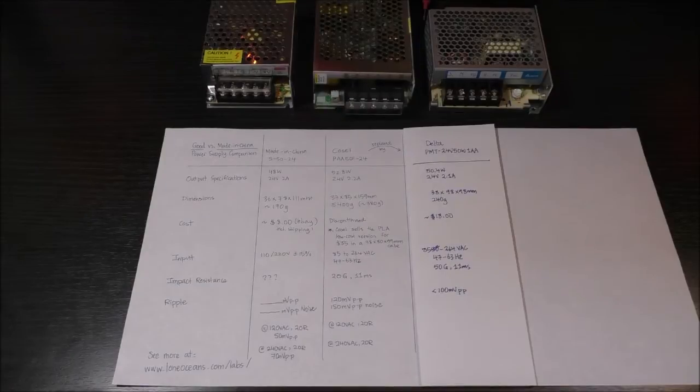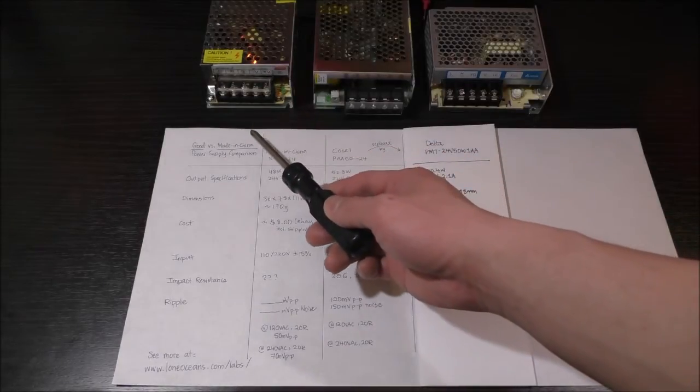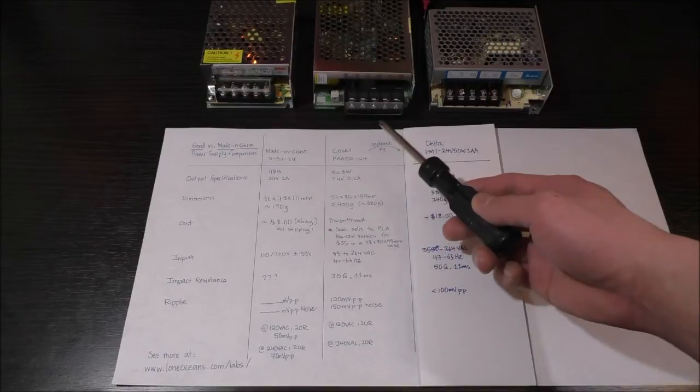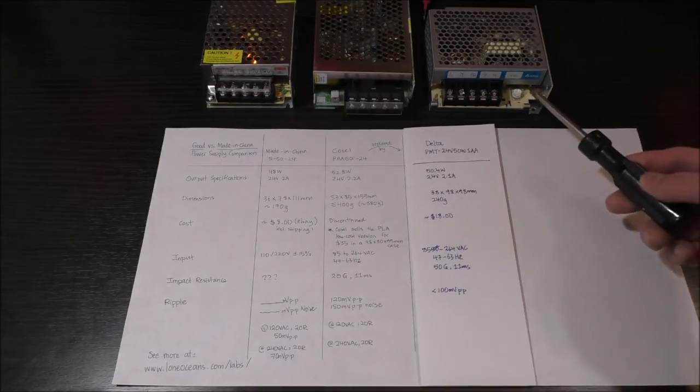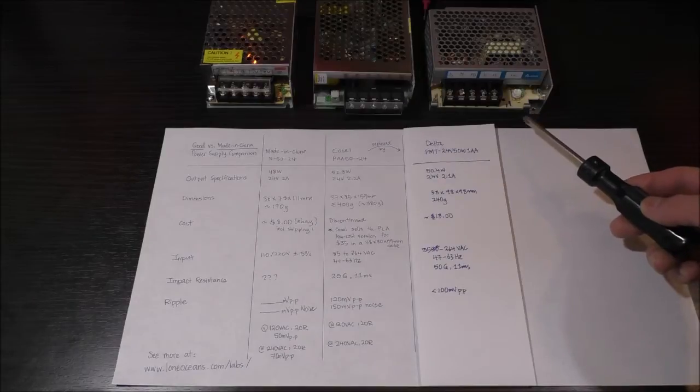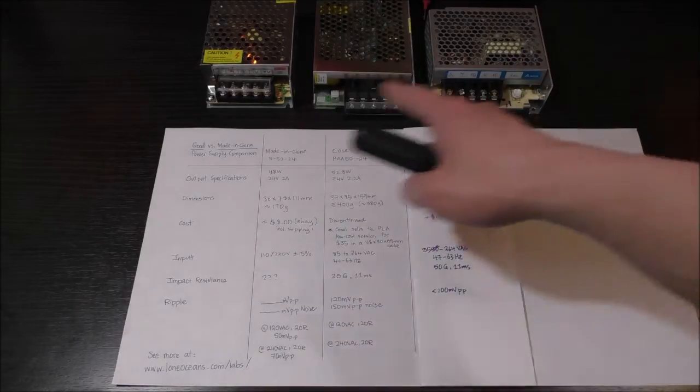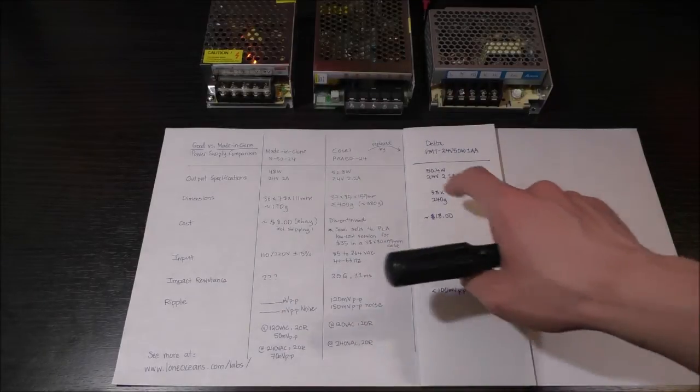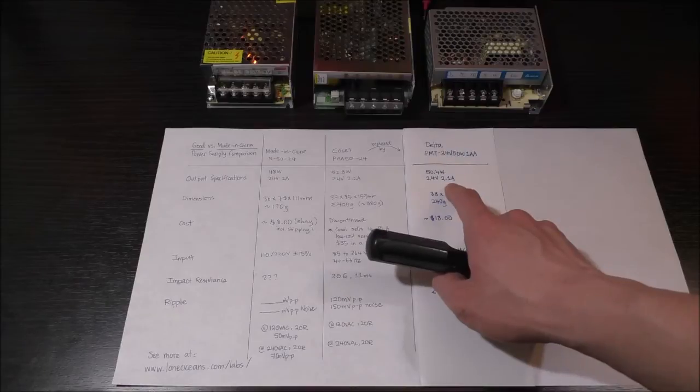Alright, once again before I do a teardown, let's do a quick comparison of the different specifications of these three different power supplies. On the left we have the cheap $8 Chinese power supply. In the middle we have the CoSel power supply which retails for about $80. And then we have this new Delta power supply which I bought for $18 on Mouser. Again, these three are all the same specifications, so they are 50 watts, 24 volts at 2 amps nominal.